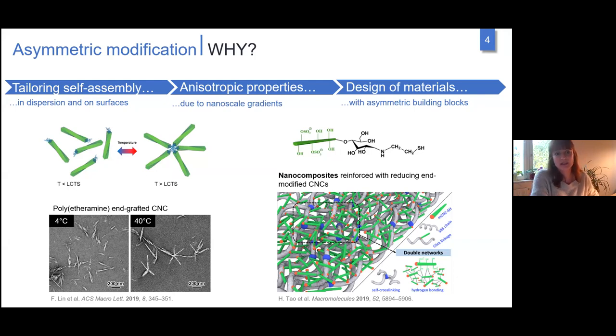Why do we do this? Why are we interested in Janus type particles? Bruno Jean in Nantes showed we can tailor self-assembly on surfaces and in dispersion. He showed very nice star-shaped assemblies by grafting Jeffamine to the reducing end groups of cellulose nanocrystals.